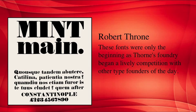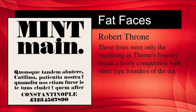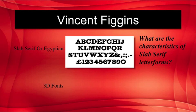Type grew steadily bolder by the decade. This led to the invention of fat faces by Robert Throne. Fat faces had a ratio of 1 to 2 to the capital height. These fonts were only the beginning, as Throne's foundry began a lively competition with other type founders of the day. Vincent Figgins started his own operation and designed and cast a complete range of Romans and had begun to produce scholarly and foreign faces.